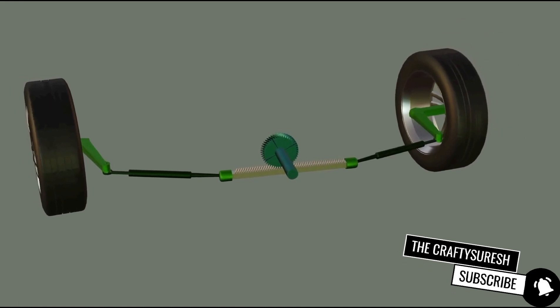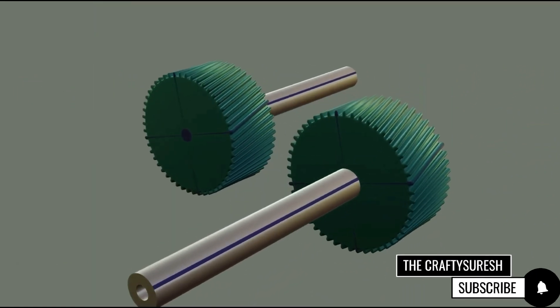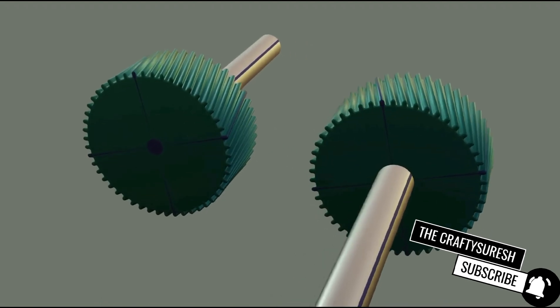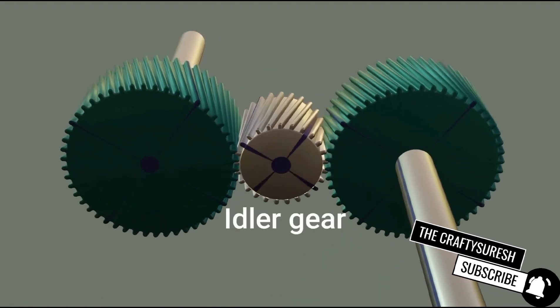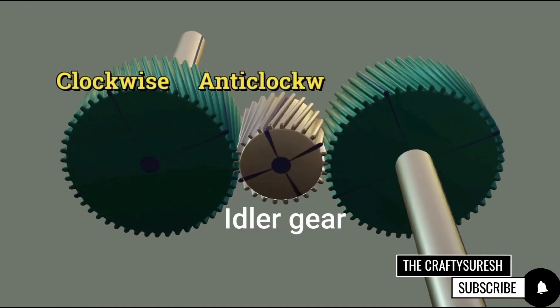Many times we face a situation where the distance between two gears is more and we need the rotation of both gears in the same direction. So for this we use an idler gear in between which will connect both gears and will make the rotational axis.